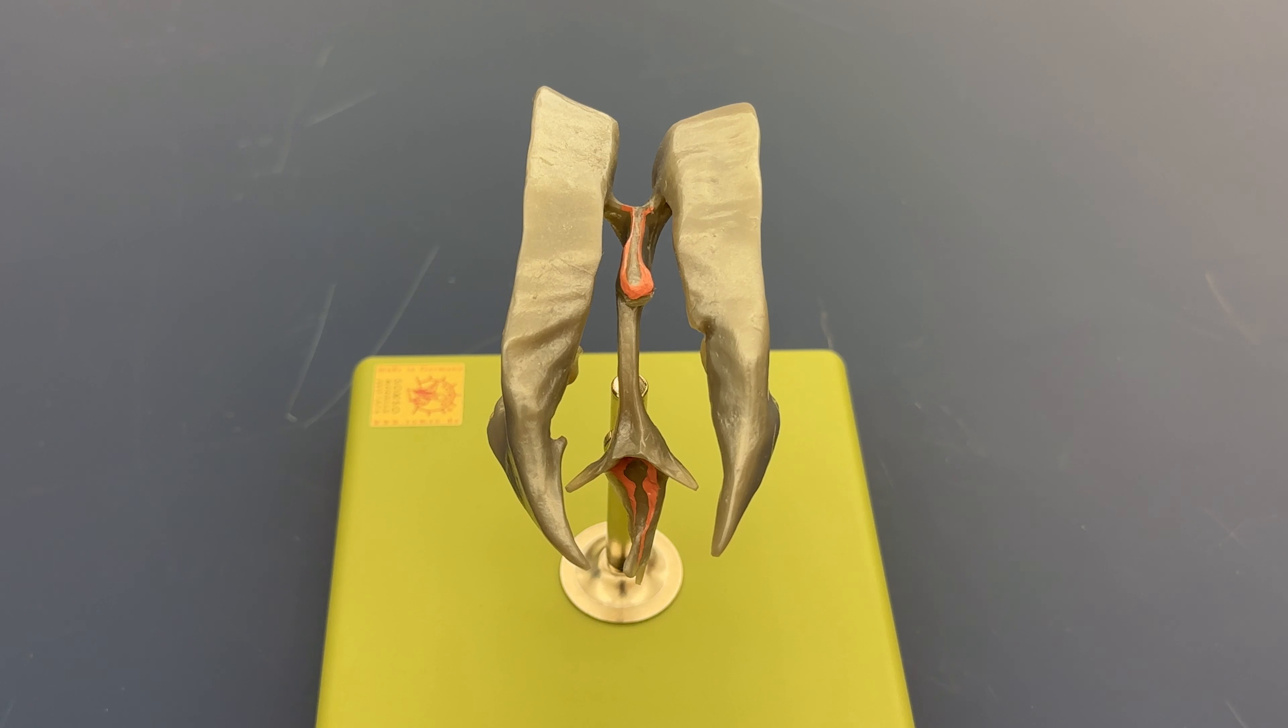Looking at it from the superior posterior view, we get a few different structures that we can see in a bit better way. We have the two lateral ventricles here.